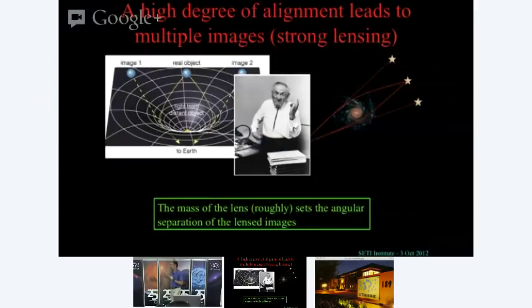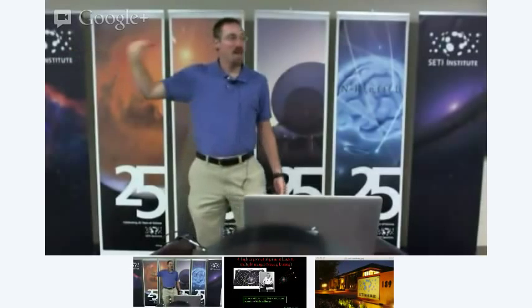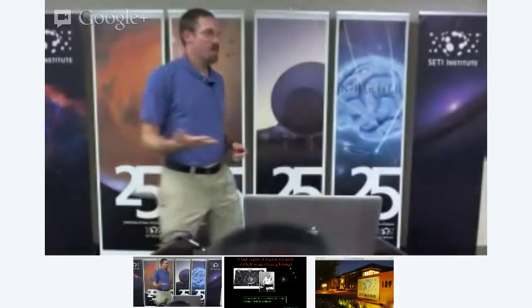What Zwicky did in the mid-1930s was realize that galaxies are much, much more massive than stars, so if you had a distant bright object behind a galaxy, the images would be split by an arc second — and you might actually be able to observe this. He made this prediction in the mid-30s, and it wasn't until the late 70s that this was actually shown. This is a case where theory was way ahead of observation.